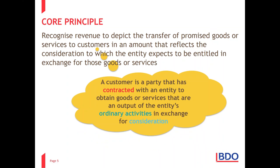What is a customer? IFRS 15 talks about customers, and a customer is a party that has contracted with an entity to obtain goods or services that are an output of the entity's ordinary activities in exchange for consideration. Only when we have a contract with a customer would we recognize revenue. If you have a contract to sell one of your main buildings, that would not meet the definition of a customer — it's not your ordinary activities — and therefore it would lead to the recognition of other income, not revenue.